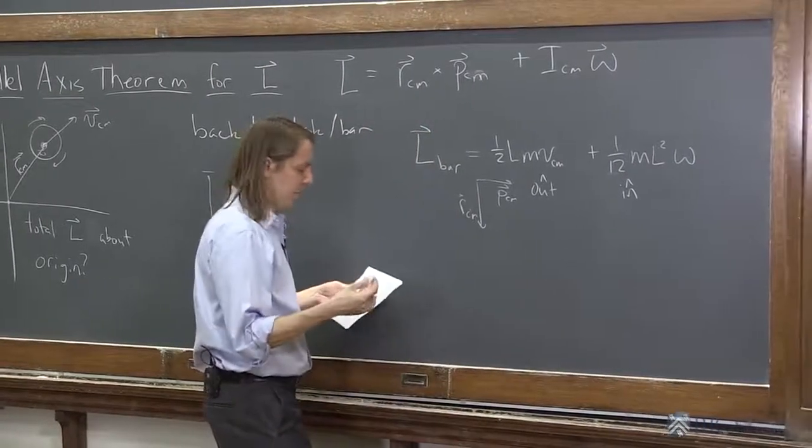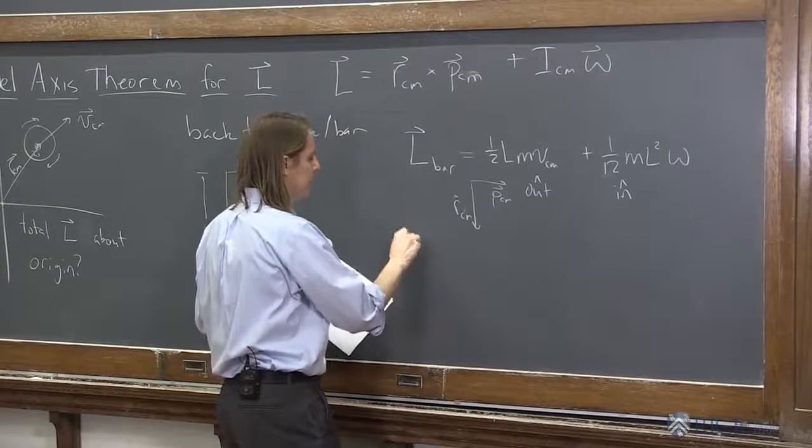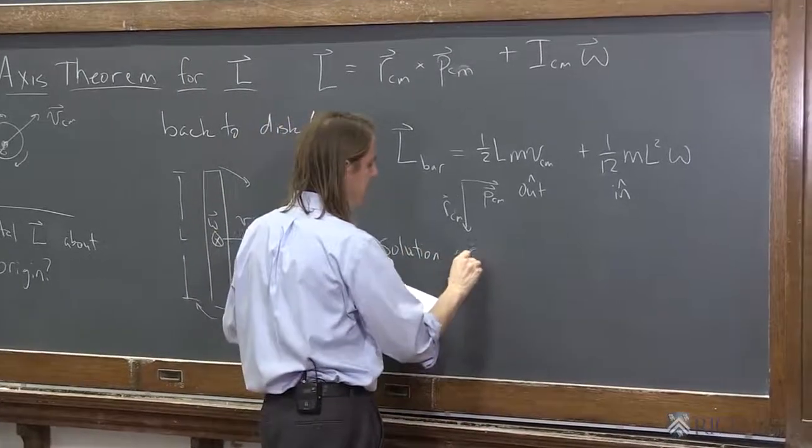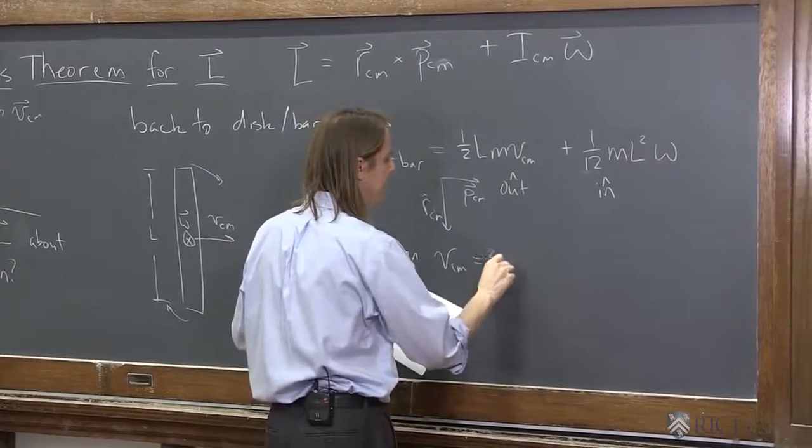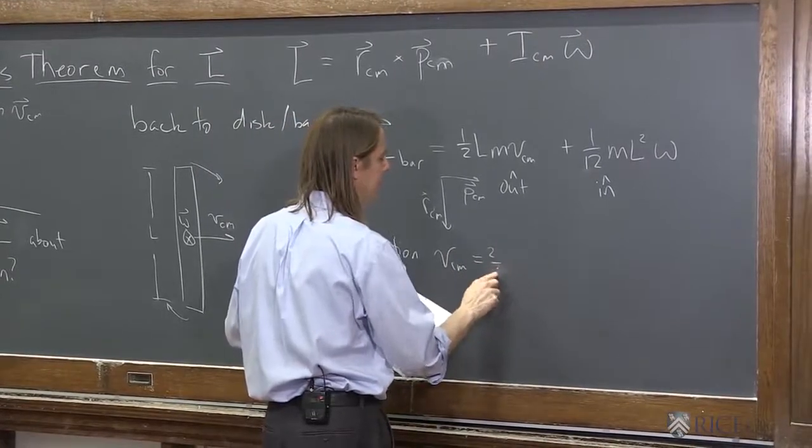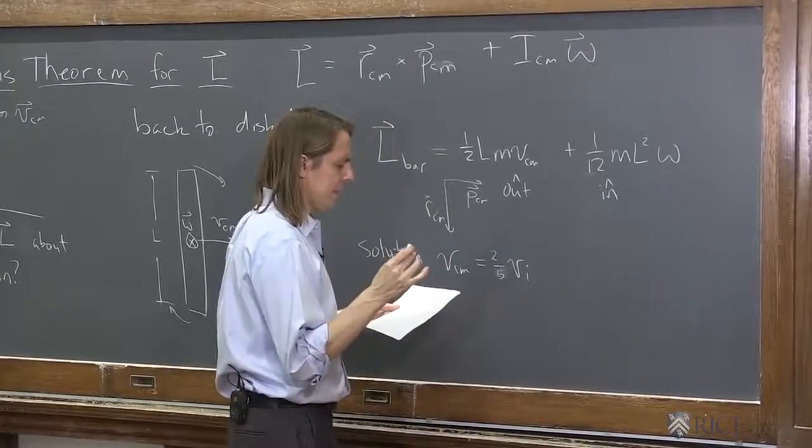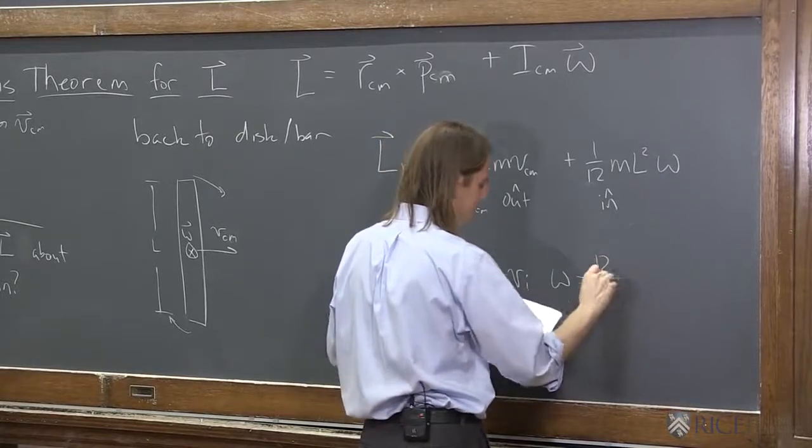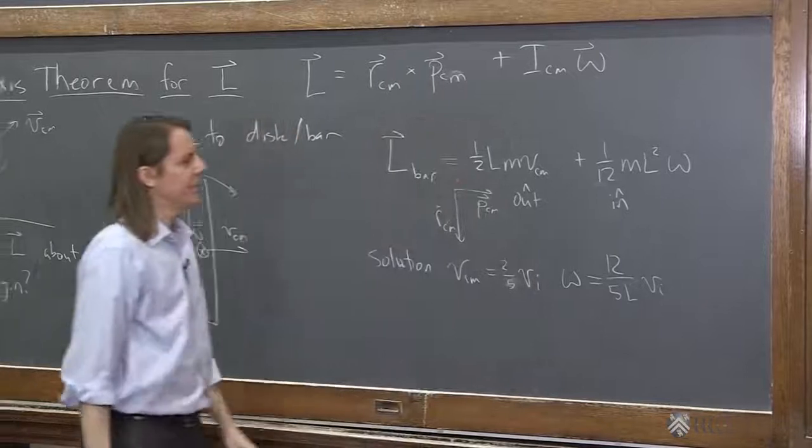That's what we got from all the elastic collision stuff. The solution was that the VCM, the velocity of center of mass, was two-fifths, the initial velocity. And the omega, the angular velocity, was 12 over 5L, initial velocity, like that.